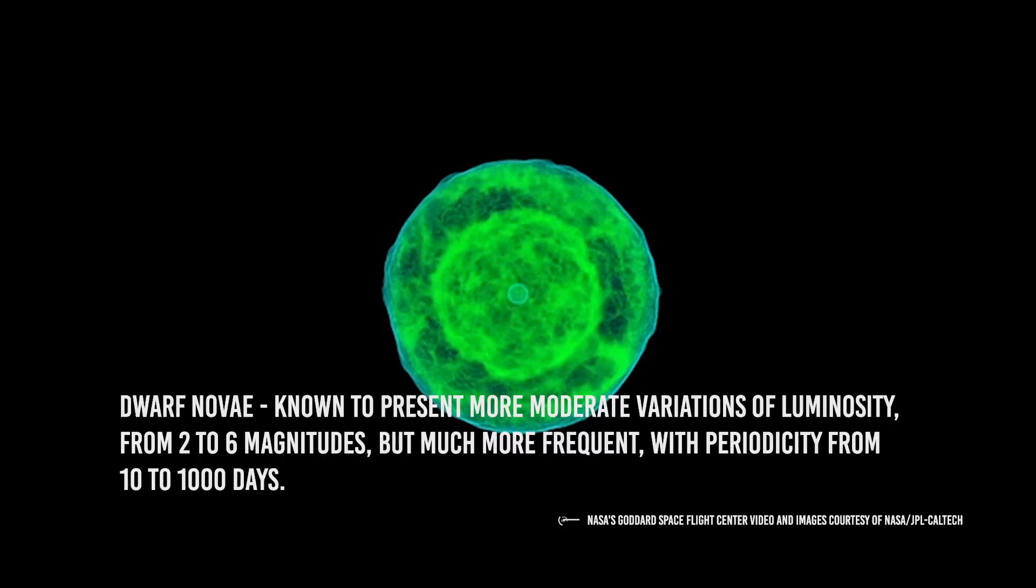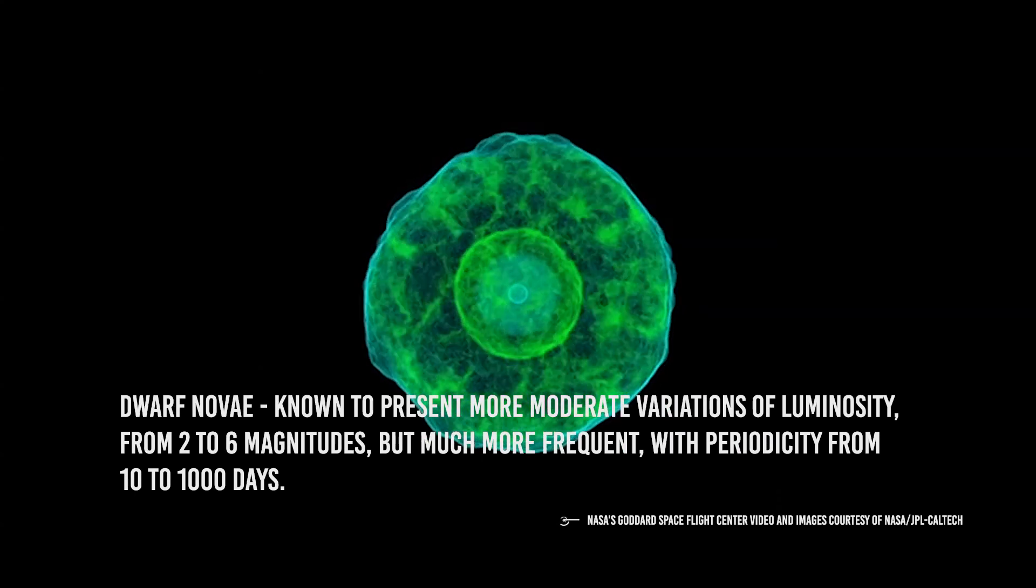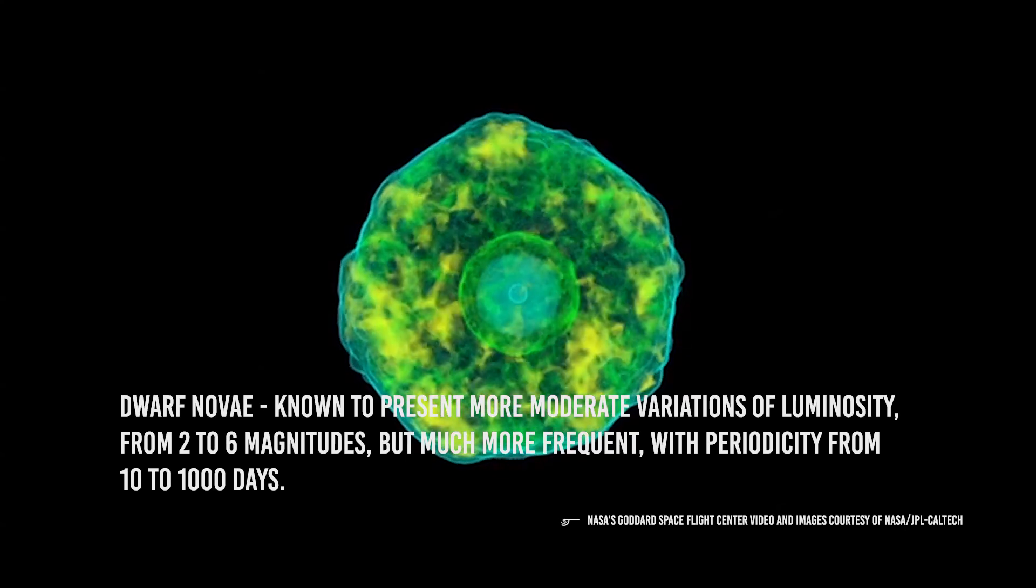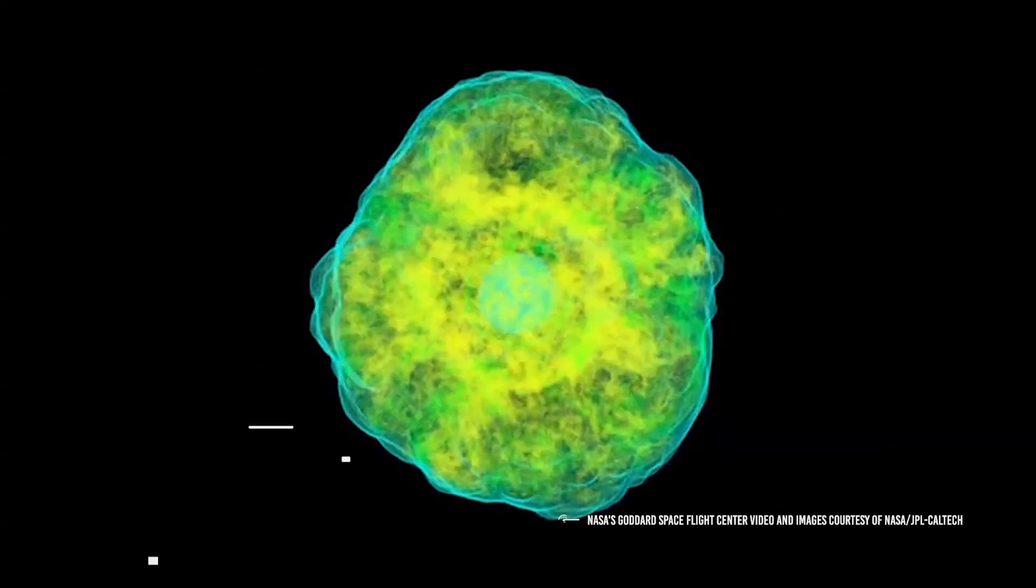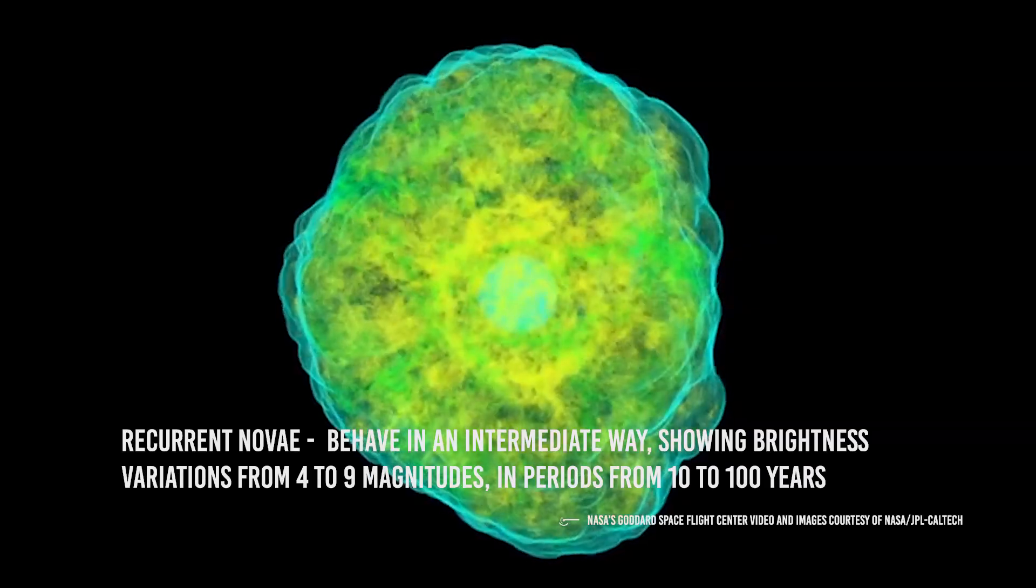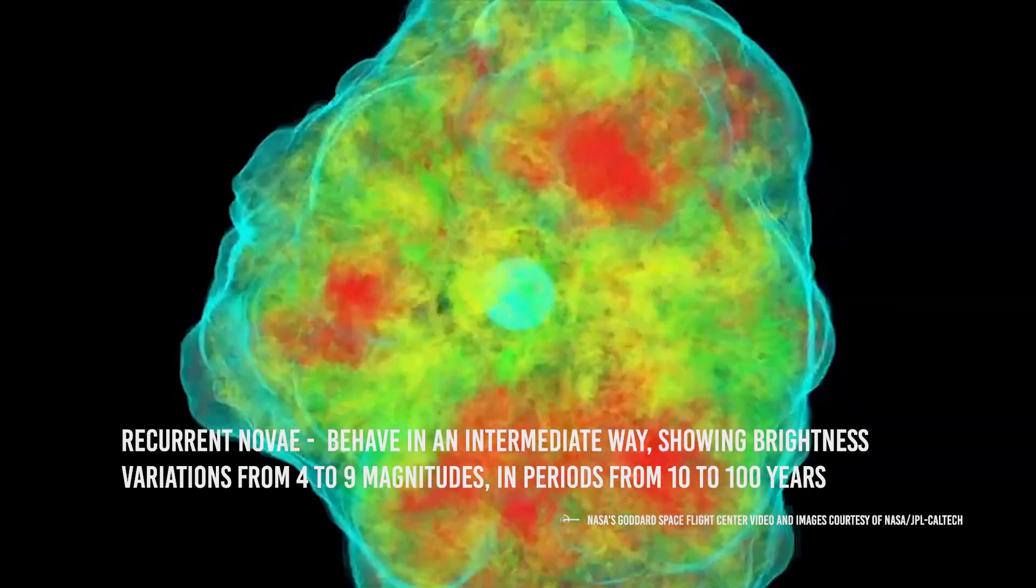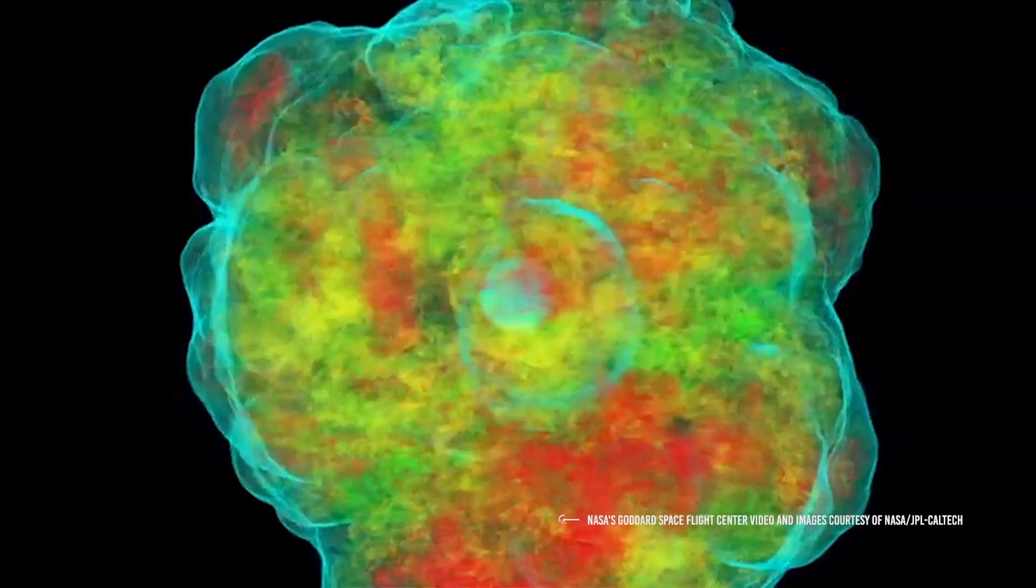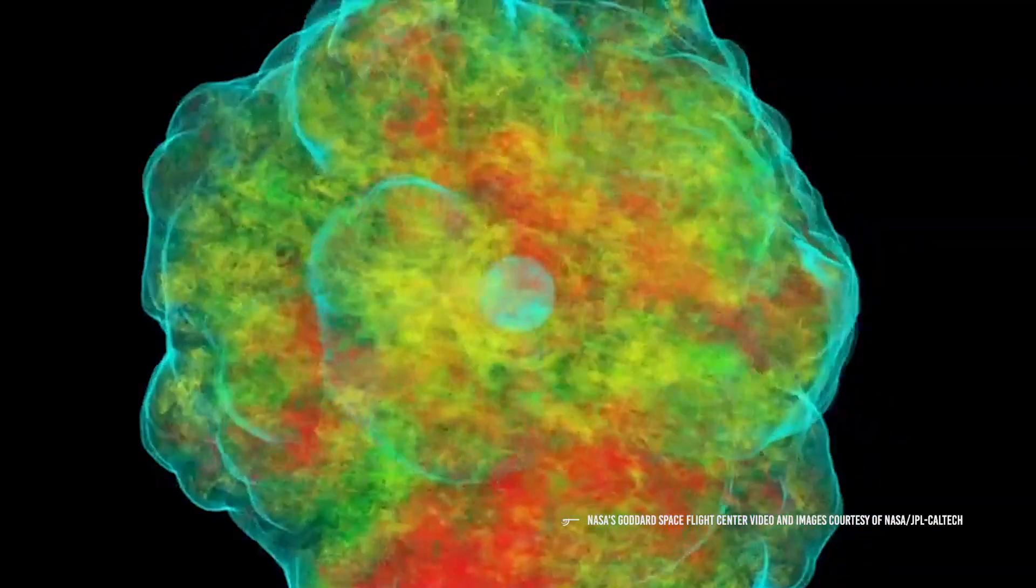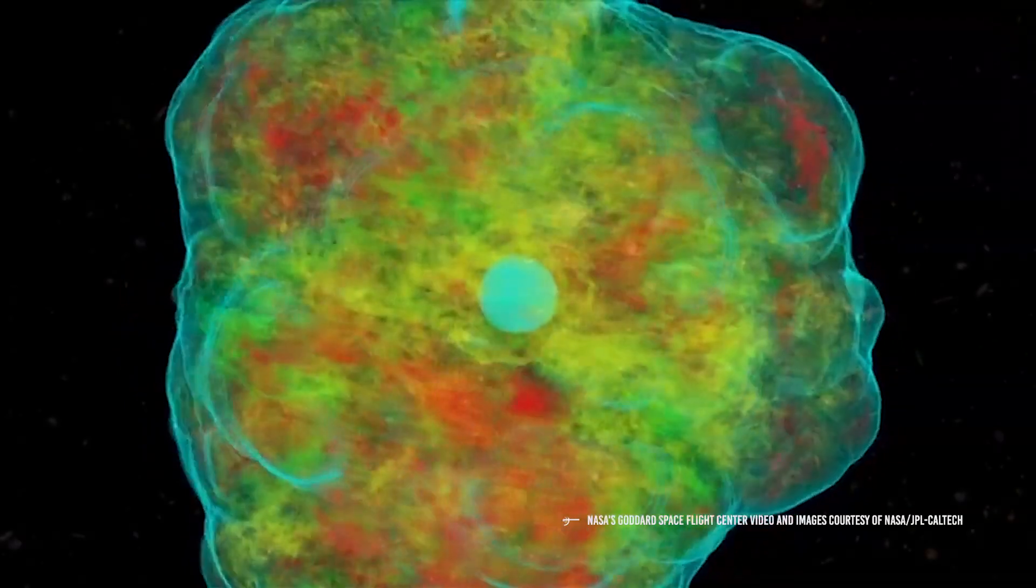and dwarf novae known to present more moderate variations of luminosity from 2 to 6 magnitudes, but much more frequent, with periodicity from 10 to 1000 days. The recurrent novae behave in an intermediate way, showing brightness variations from 4 to 9 magnitudes in periods from 10 to 100 years. They are therefore events that cannot be considered rare in astronomical terms, but certainly difficult to observe systematically.